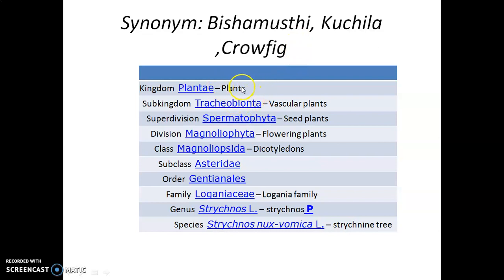Here you can see the taxonomic profile of Nux Vomica. It is under Kingdom Plantae, Sub-kingdom Tracheobionta, Superdivision Spermatophyta, Division Magnoliophyta, Class Magnoliopsida, Subclass Asteridae, Order Gentianales. Family is Loganiaceae, Genus is Strychnos, and species is Strychnos Nux Vomica. It is also known as the Strychnine tree.